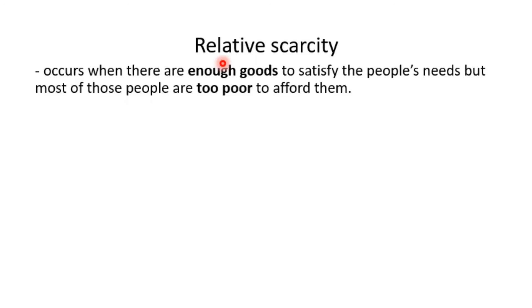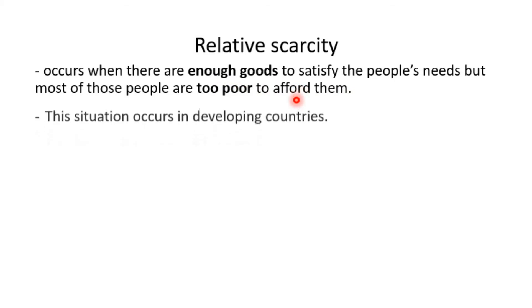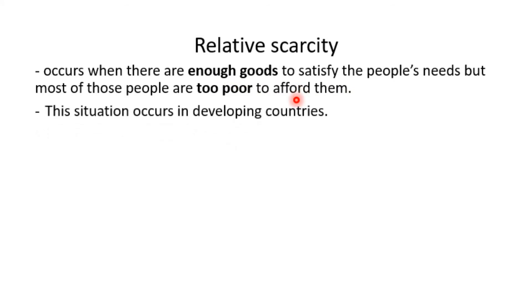What is relative scarcity? Relative scarcity occurs when there are enough goods to satisfy people's needs, but most of the population are very poor — they cannot afford to buy the goods and services. This is what usually happens in developing countries.